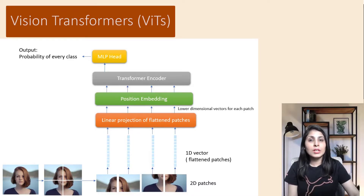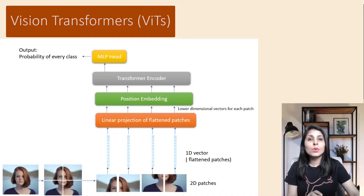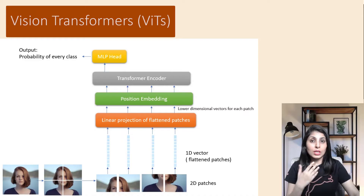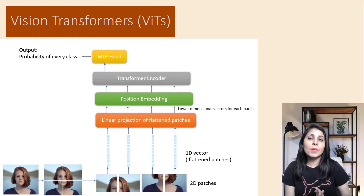Instead of a decoder, there is just an extra linear layer for final classification called the MLP head. The absence of a decoder is one of the key differences between vision transformers and traditional transformer architectures used in NLP. In NLP tasks like translation or text generation, a decoder is needed to generate output sequences based on learned representations. But in computer vision tasks like image classification or object detection, the primary goal is to extract meaningful features and understand spatial relationships within the image — which the encoder handles via self-attention, capturing both local and global dependencies between image patches.